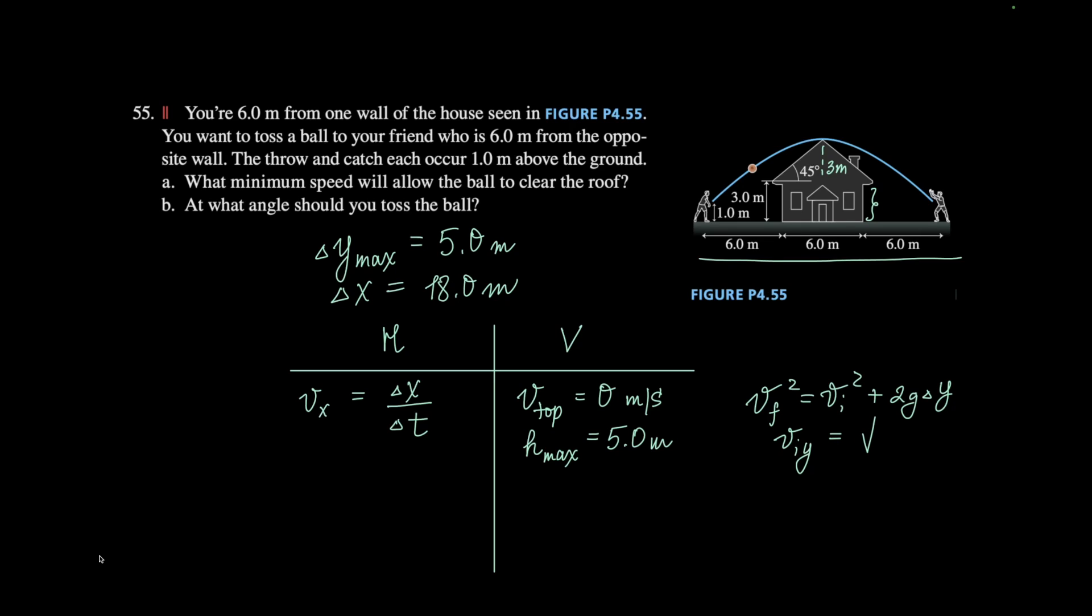So it's going to be root of 19.6 times 5, 9.899, 9.9 meters per second.